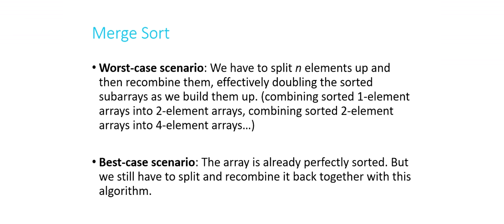It's not necessarily as straightforward as bubble sort, insertion sort, or selection sort, but there are definite advantages. In the worst case scenario, we split up n elements and then recombine them, effectively doubling the sorted arrays as we build them up — two one-element arrays become a two-element array, two two-element arrays become a four-element array, and so on. Because we might have to combine log n times, the worst case runtime of merge sort is O(n log n), which is generally faster than n squared.